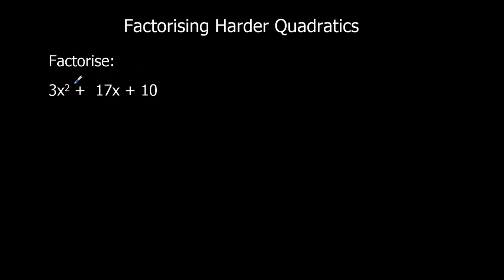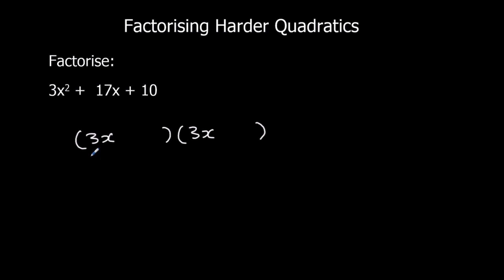I've got a 3 in front of the x squared — that's the thing that's going to make it hard to factorise. So in this method, what you've got to do is write 3x — whatever the coefficient of x squared is, in this case 3 — you write that in front of the x in both brackets, and write it over 3.